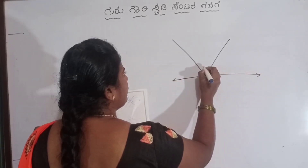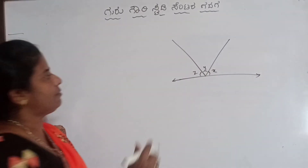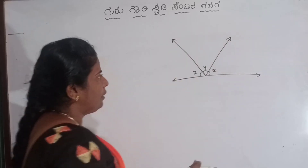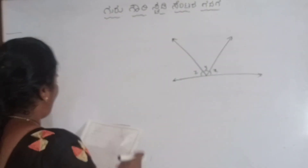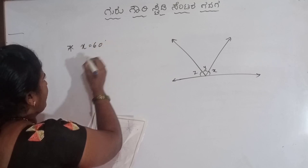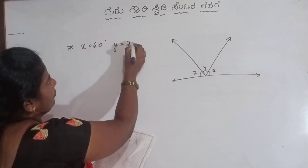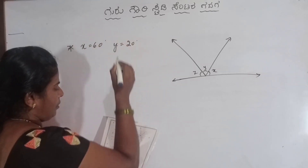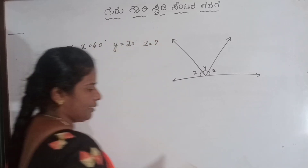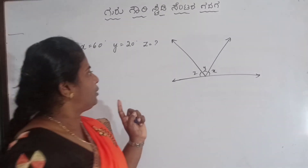X angle, Y angle, Z angle — X, Y, Z. It will cut out the values. X is equal to 60 degree. Y is equal to 20 degree. Z is equal to find. Number two: this is A, O, B, C, D. X is equal to 60 degree. Y is equal to 20 degree. Z is equal to find.